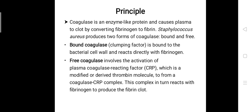This bound coagulase causes clot formation of the plasma by converting soluble fibrinogen to insoluble fibrin, and this bound coagulase can rapidly be recognized by the slide test method. The free coagulase converts fibrinogen to fibrin by activating the coagulase reacting factor and it can be detected by the tube test method.